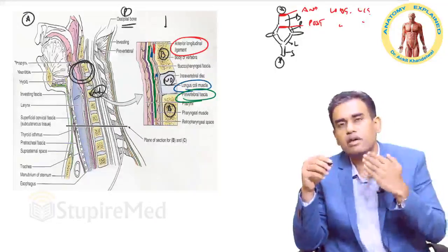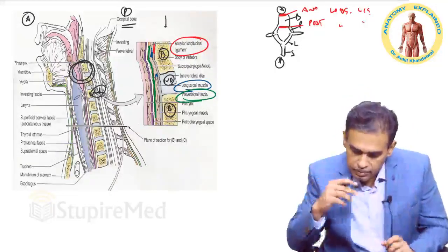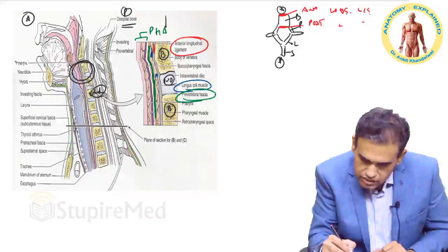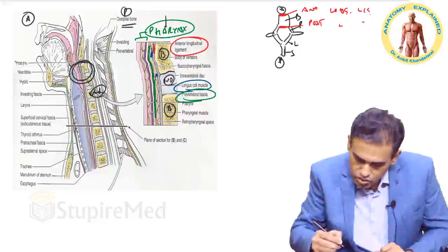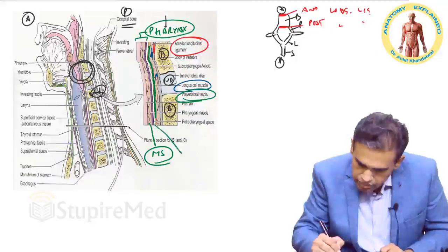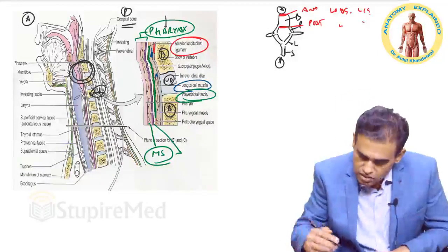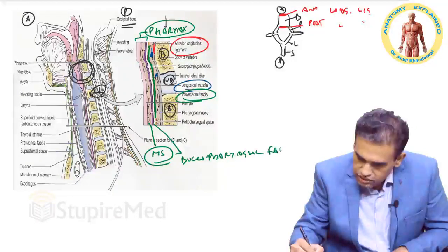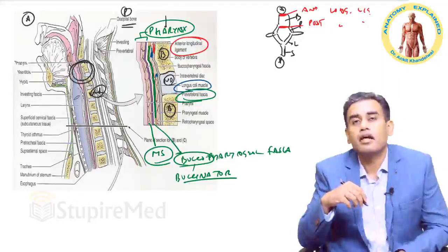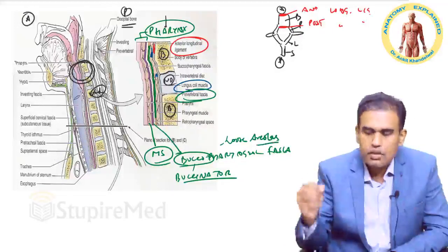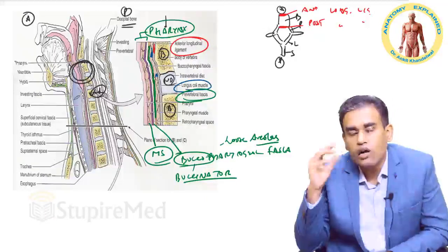So you have a prevertebral muscle covered by a prevertebral fascia. Anterior to this, this whole area is your pharynx. You have the pharynx here, the muscle of the pharynx, and behind it is the outermost layer of the pharynx which is known as the buccopharyngeal fascia — 'bucco' because it is continuous with the buccinator muscle studied in the muscles of the face.